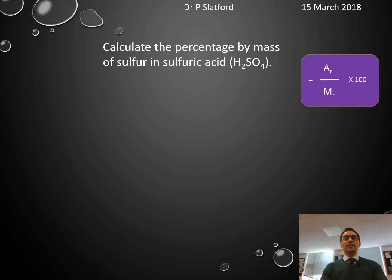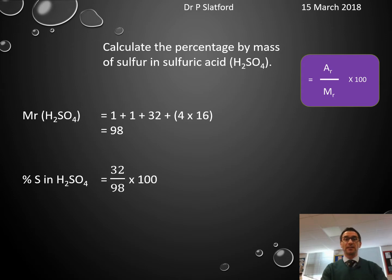Calculate the percentage by mass of sulfur in sulfuric acid (H2SO4). We need to work out the Mr of sulfuric acid: 2 times 1 plus 32 plus 4 times 16, which equals 98. The percentage of sulfur is 32 out of 98, which equals 32.7%.